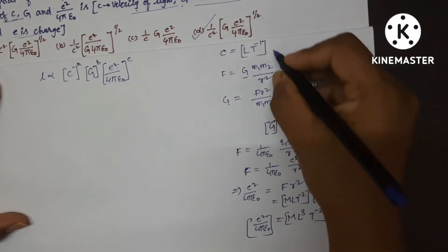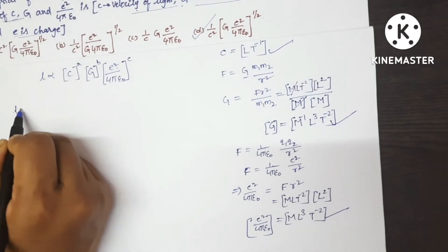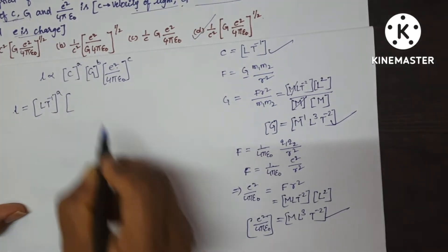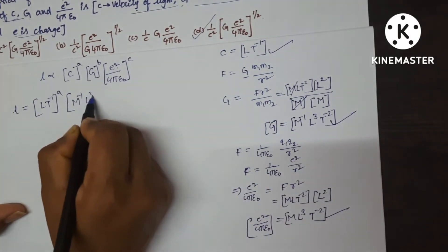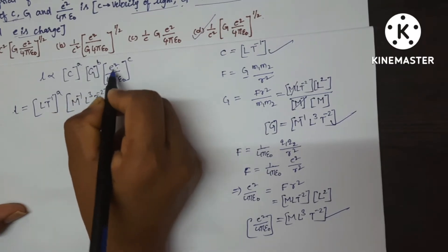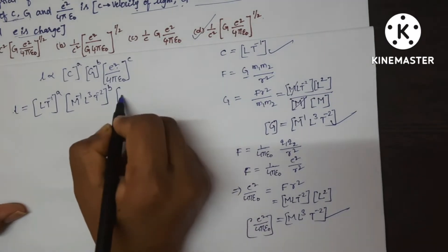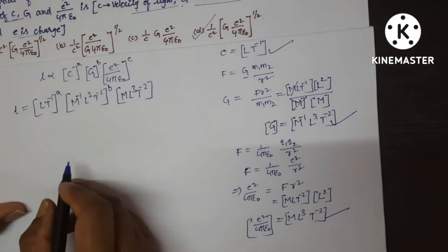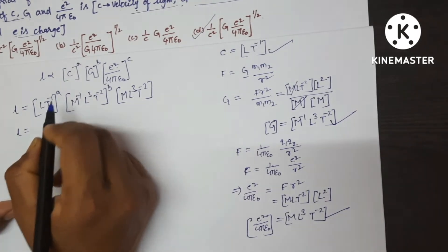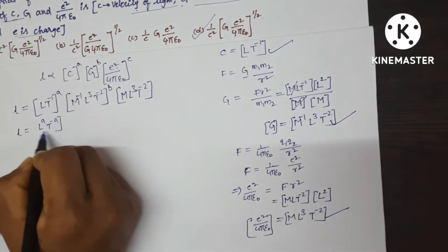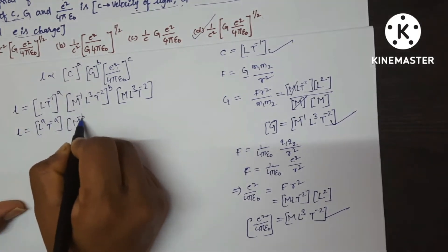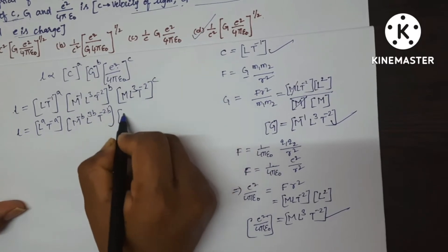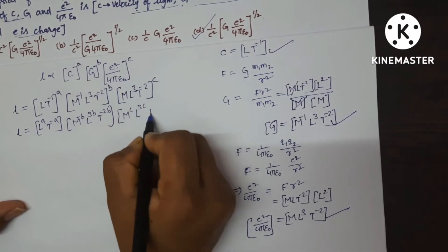Now substitute all three values into the equation. L = (L T⁻¹)^A · (M⁻¹ L³ T⁻²)^B · (M L³ T⁻²)^C. Multiplying the powers inside the brackets: L^A · T^(−A) · M^(−B) · L^(3B) · T^(−2B) · M^C · L^(3C) · T^(−2C).